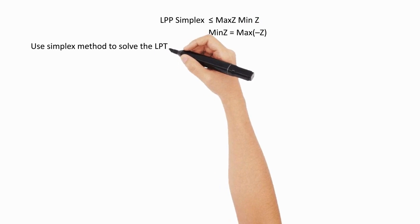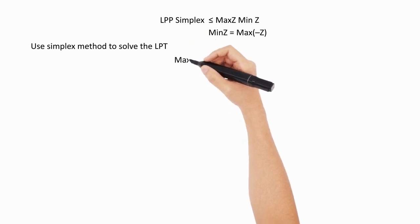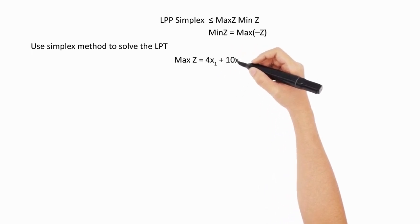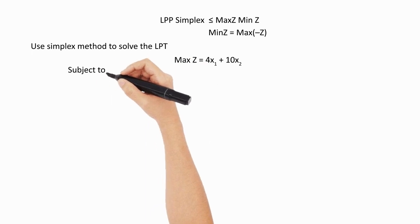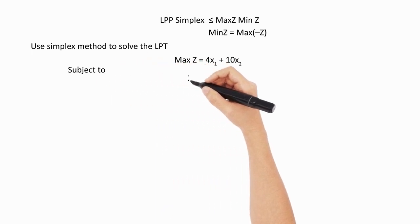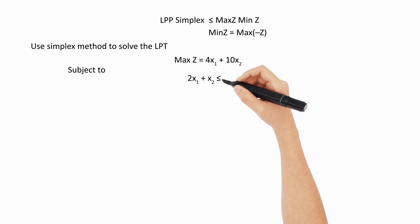The question is: we have an objective function max Z = 4x1 + 10x2, and these are subject to the constraints. The different constraints given are 2x1 + x2 ≤ 50.